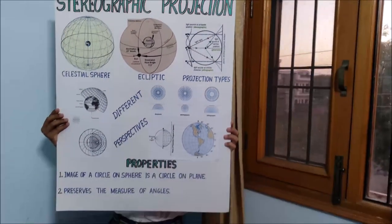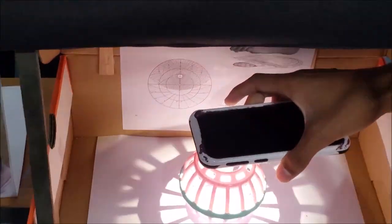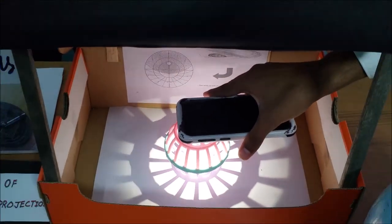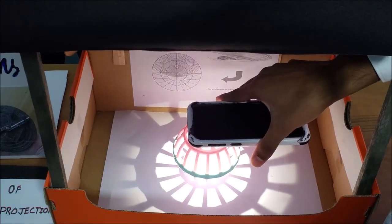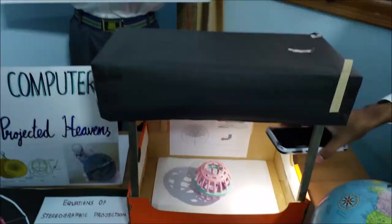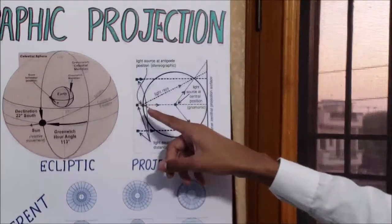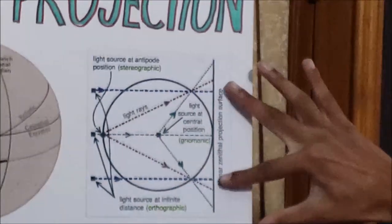Now the third type of projection is a stereographic projection which is when the source of light is kept at one of the antipodes of the sphere. That is at one of the poles of the sphere. As you can see this shadow is a stereographic projection of this toy ball. Now take a look at the chart once again. As you can see the point of projection is at the antipode of the sphere and this creates a projection like this.